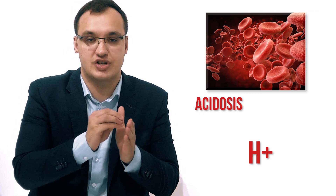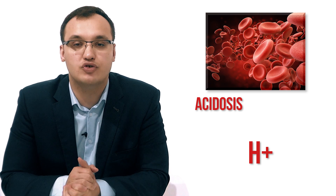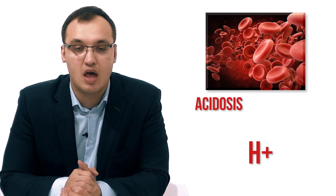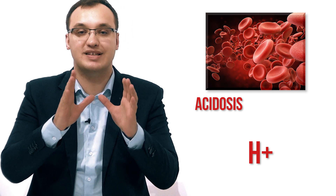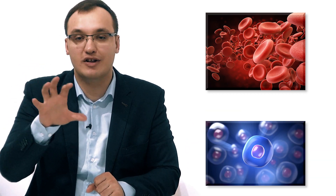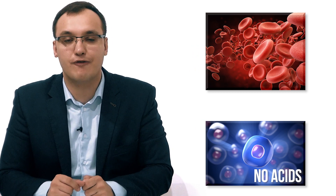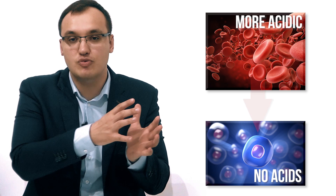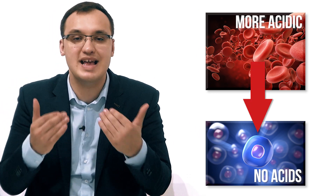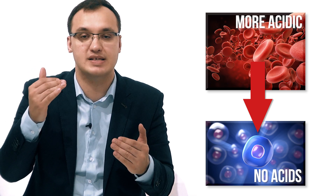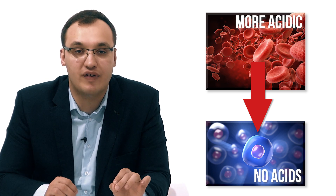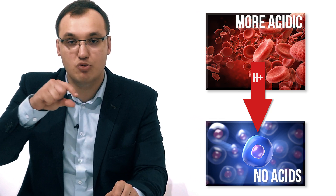In the blood, in the case of acidosis, we have a high amount of protons — high amount of hydrogen ions, which are positively charged. The body dislikes large differences between two spaces. Inside the cell it is not as acidic as in the blood, so the hydrogen ions will tend to move into the cell to compensate. If there is a high amount of hydrogen ions in the blood, they will move into the cell.